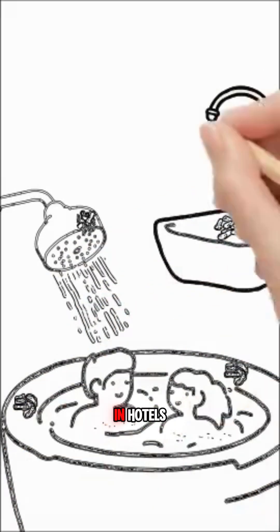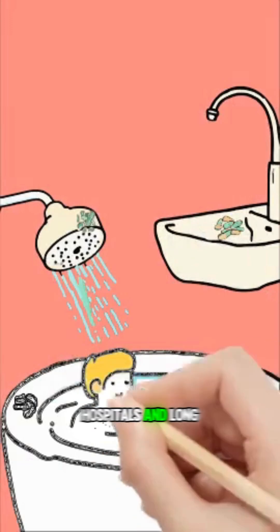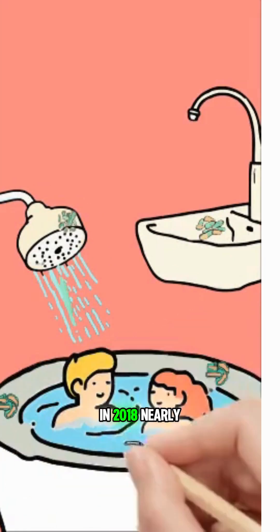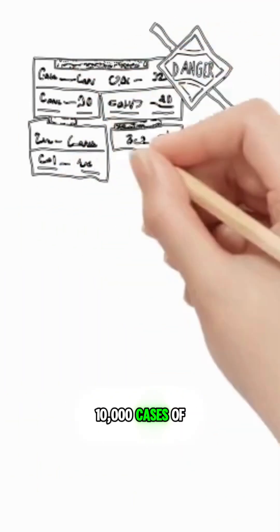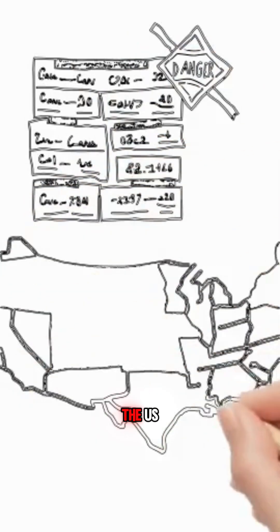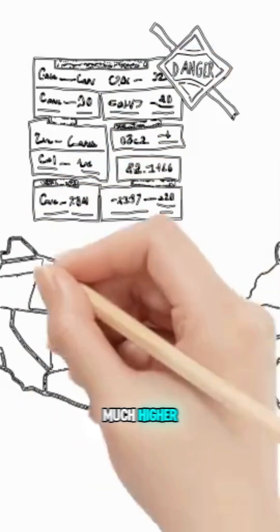Outbreaks often occur in hotels, hospitals and long-term care facilities. In 2018, nearly 10,000 cases of Legionnaires' disease were reported in the U.S., but the real number is probably much higher.